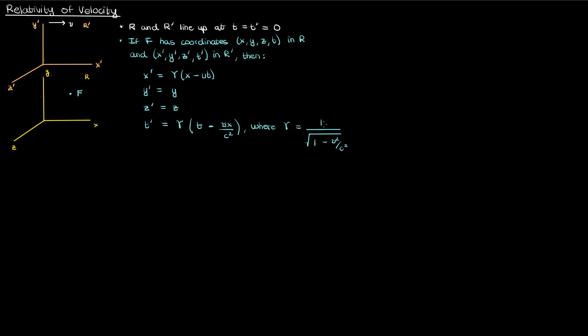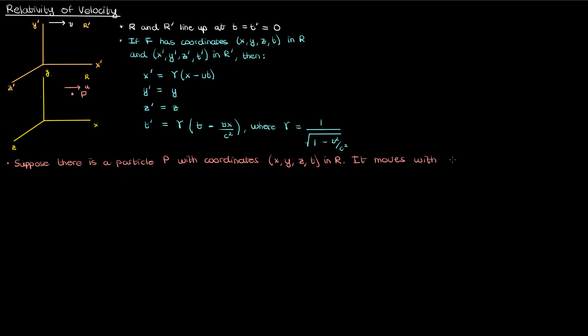Now in order to arrive at the equations for the relativity of velocity, we're going to need to add a wrinkle to this reference frame problem. Suppose that instead of a static event f that occurs at a fixed place in time, we'll have a dynamic particle p with coordinates x, y, z, and t in the reference frame r. Instead of staying fixed, this particle is actually moving with a velocity vector u, which has three components: ux for the x direction, uy for the y direction, and uz for the z direction.